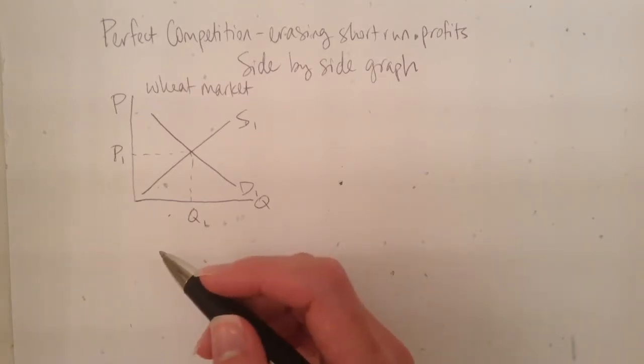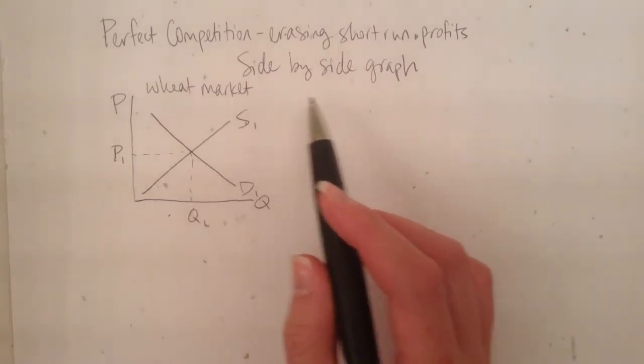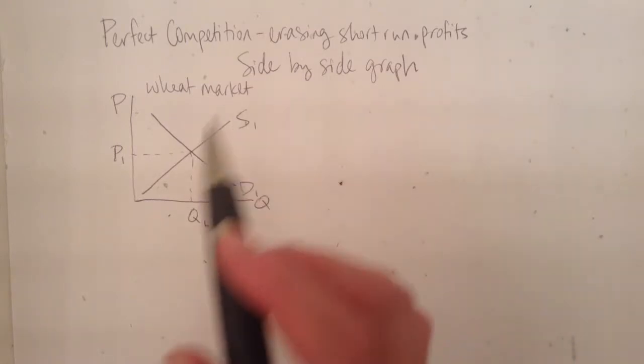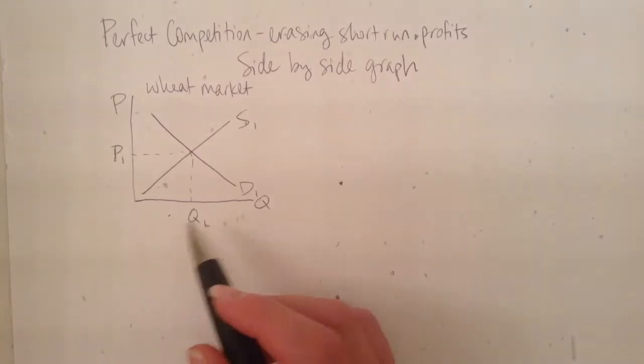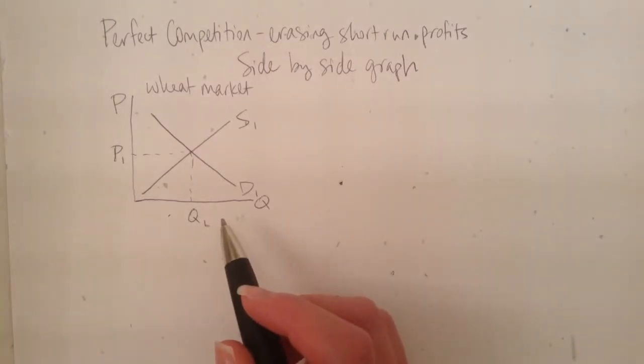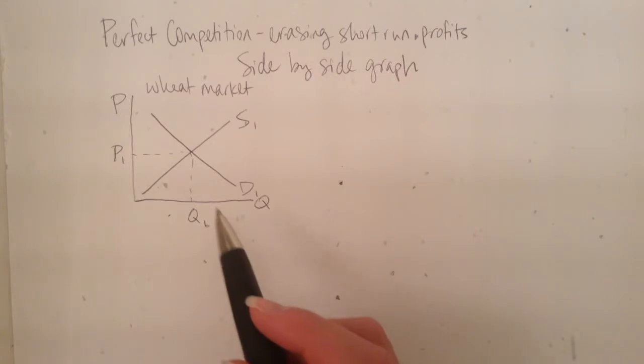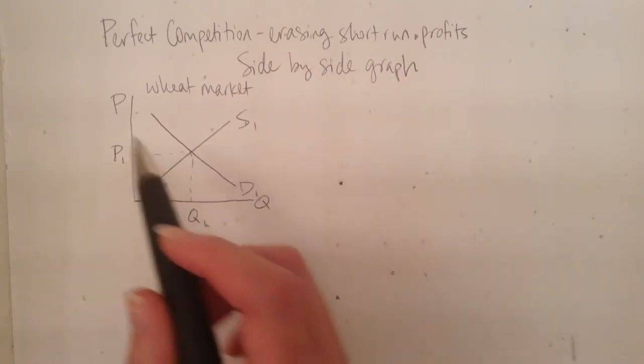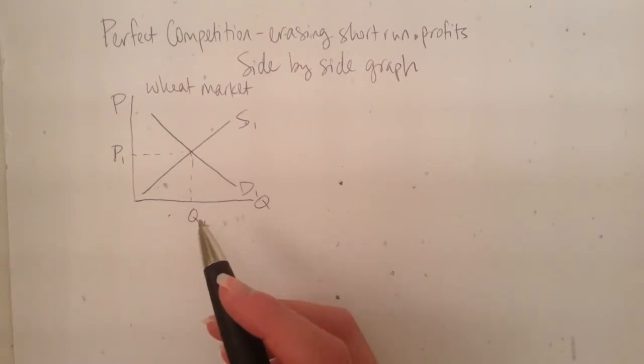So there may come a time when you need to graphically represent that process, and I'm going to show you how you do that. What you need to draw is a side-by-side graph. Your side-by-side graph starts with a normal supply and demand graph for the whole entire market. So over here, we've got the graph for the wheat market with price and quantity on the axes. We've got upward sloping supply, downward sloping demand, and then our equilibrium price and quantity.